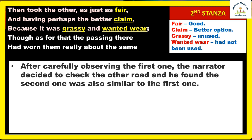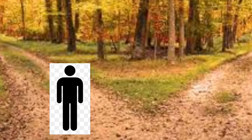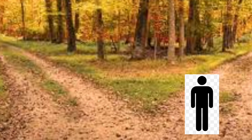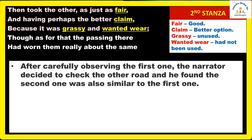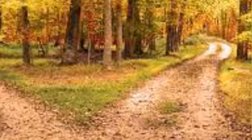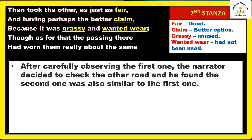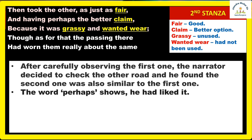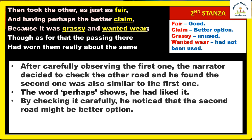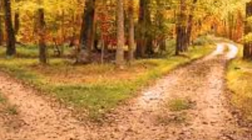After carefully observing the first road, the narrator decided to check the other road. He found the second road was also similar to the first one — it was 'as just as fair,' meaning both roads looked the same. But the second line is slightly different: 'and having perhaps the better claim.' The word 'perhaps' shows that maybe he liked the second road a bit more, thinking it might be the better option.